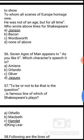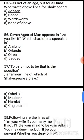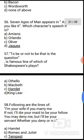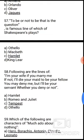Question 56: 'Seven Ages of Man' appears in As You Like It — which character's speech is it? The correct answer is option D, Jaques. Question 57: 'To be or not to be, that is the question' is a famous line from which of Shakespeare's plays? The correct answer is option C, Hamlet.